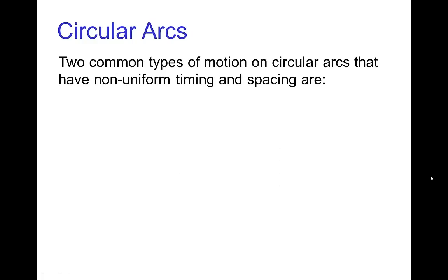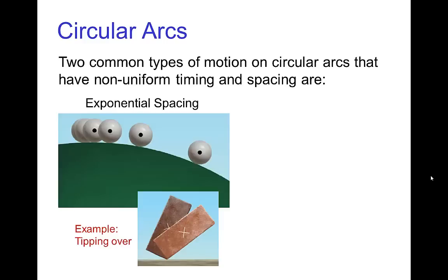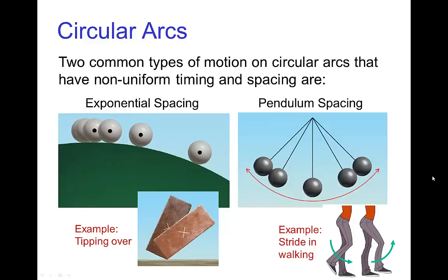Another common type of path of action is a circular arc. We have various kinds of timing and spacing for a circular arc. We have the example when something is tipping over, that has a certain timing and spacing. And when something is swinging like a pendulum swinging on a pivot, this has a different kind of timing and spacing.